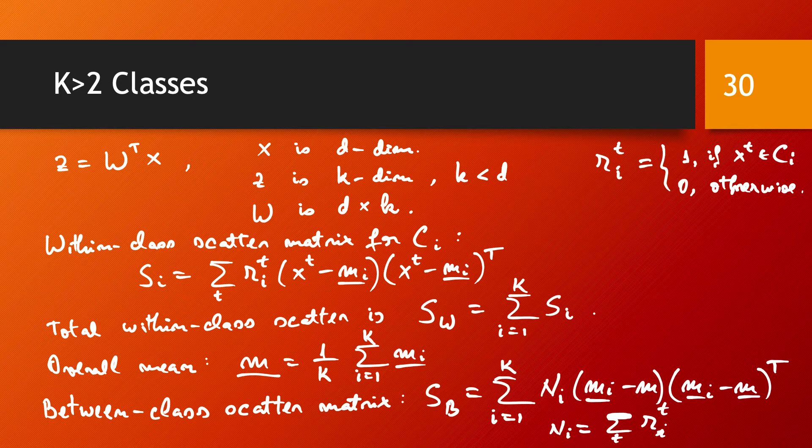So the between class scatter matrix after projection is W transposed times S_B times W. And the within class scatter matrix after projection is W transposed times S_W times W. And these are both K times K matrices.